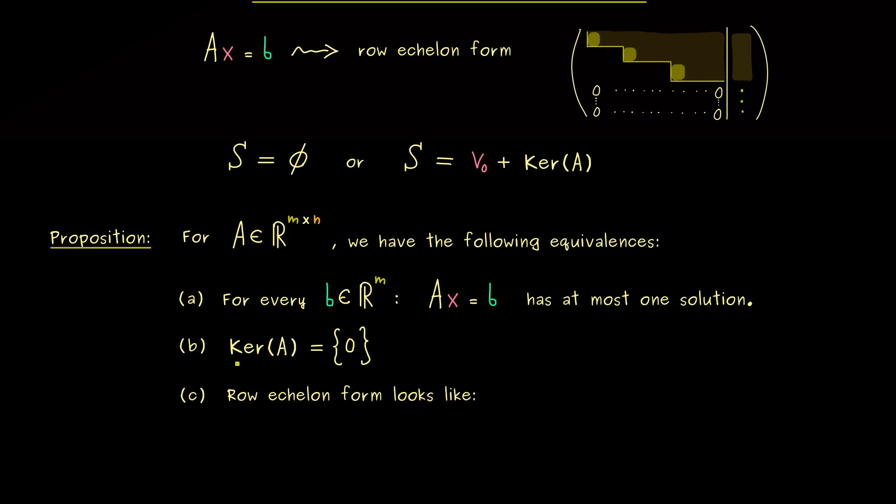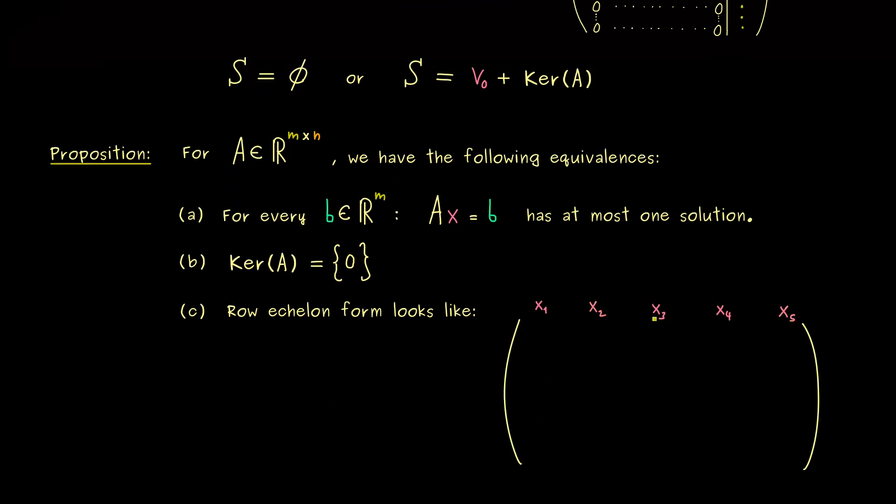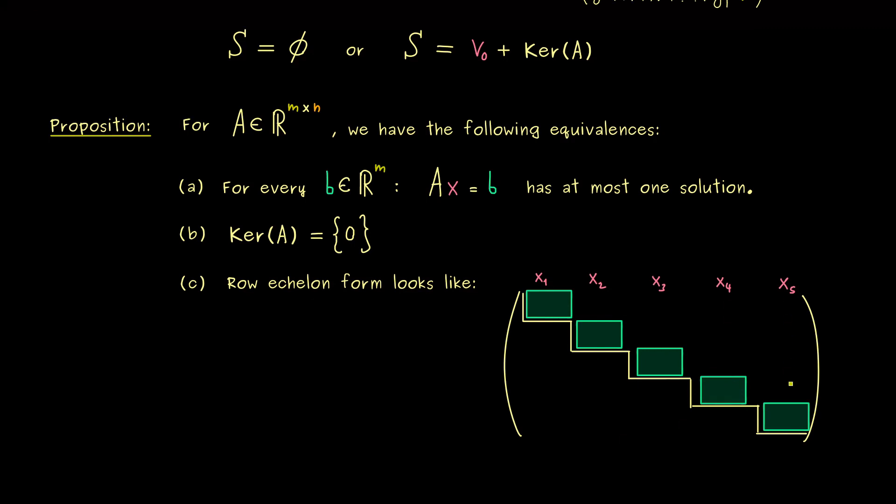However, now we also know that the dimension of the kernel was completely given by the row echelon form of A. More precisely, the number of free variables is exactly the dimension of the kernel. Therefore, the trivial kernel requires that there are no free variables. In other words, every variable is a leading variable. So this means, in each column you find a pivot.